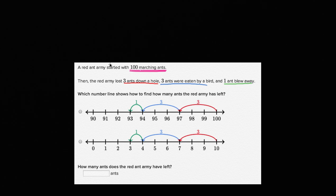Well, the army started with 100 marching ants. We underlined that over here. So we need to start with 100. This one starts with 10. So I can immediately rule this one out. And so we could just select that one. But let's just make sure it makes sense.